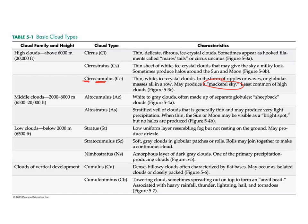You might be wondering: do you need to memorize the two-letter abbreviation? No. But you'll see me use them a little bit. When we talk about storm clouds, it'll be cumulonimbus — CB.